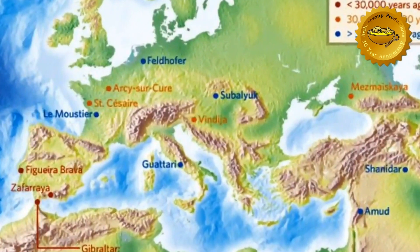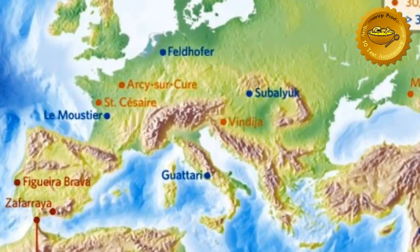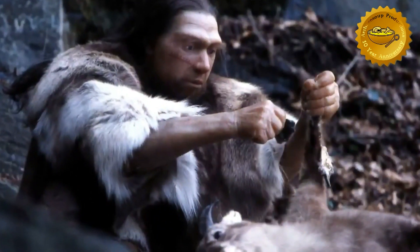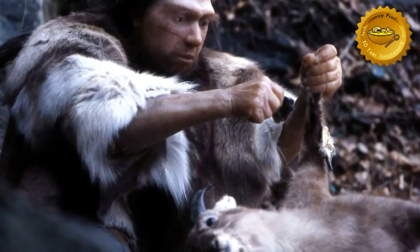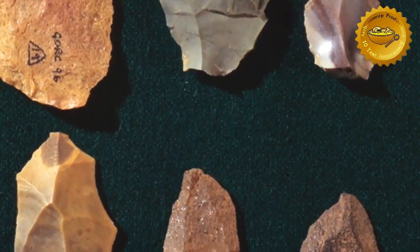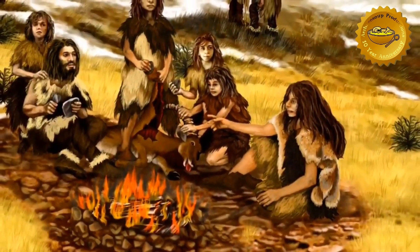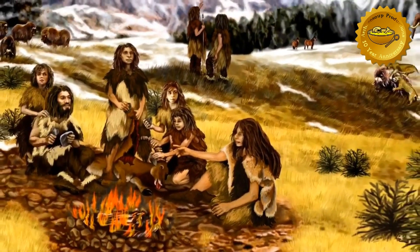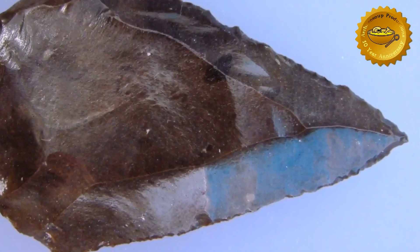Despite those limitations, thermoluminescence has been used across the world for dating various objects with extremely useful results. Between 300,000 and 30,000 years ago, Neanderthals living in Europe were making and creating stone tools known as the Mousterian industry. Sometimes known as the Levallois technique, these distinctive tools were used for many tasks. If, through cooking or an accident, a stone tool was exposed to burning, it can be dated using thermoluminescence — and indeed, just such tools have been used to date Neanderthal sites.